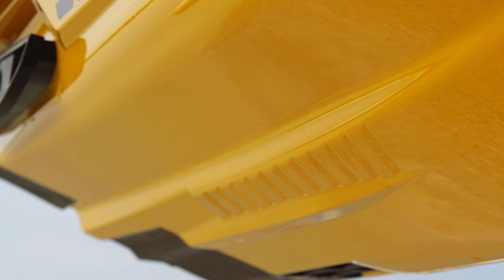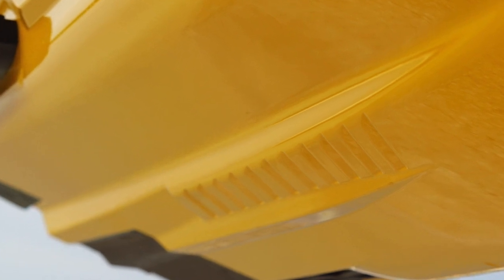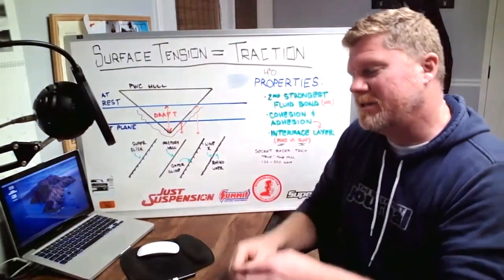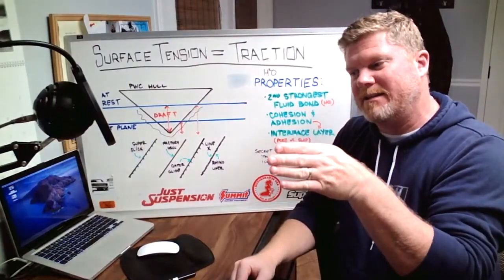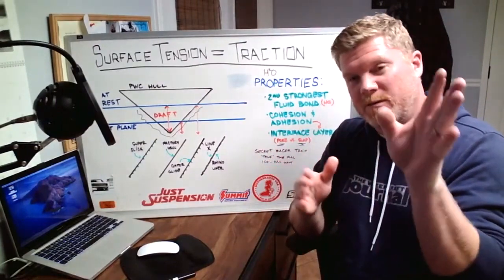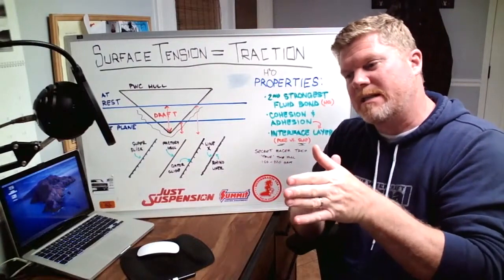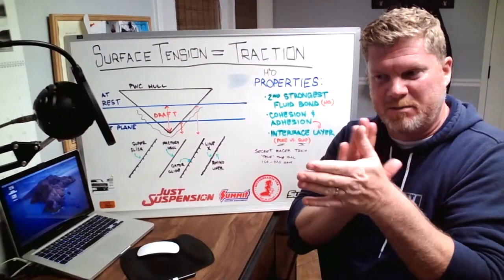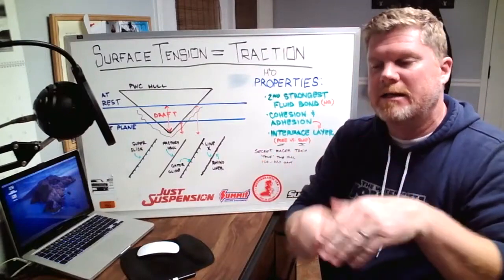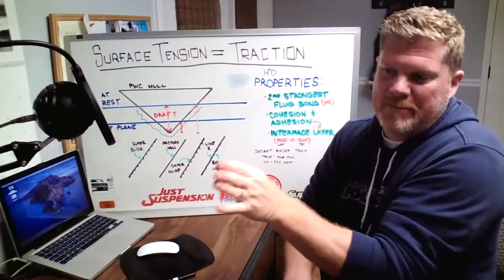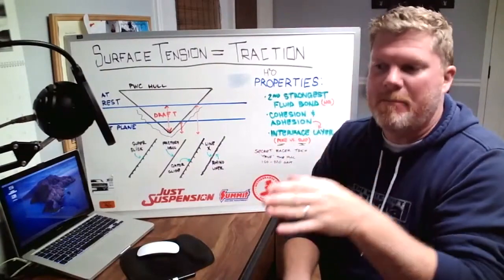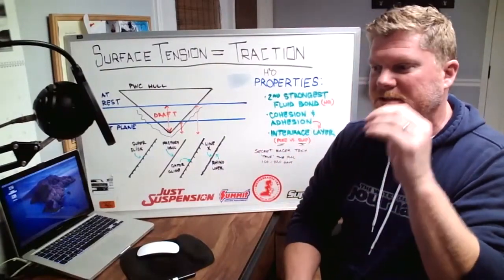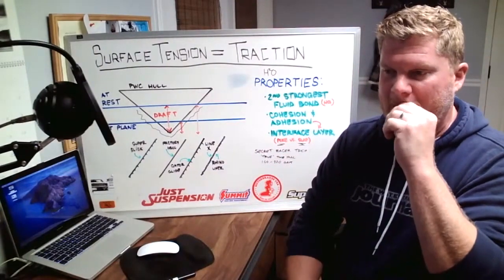But what was the big thing they started telling everyone about was the shark gills. Oh my gosh, it's got shark gills, oh it's so awesome. What the hell do shark gills do? The shark gills, the way the RXP-X was designed previously, was meant to have as much surface tension as possible and to bite in a hairpin corner so that it only wanted to snap turns. It wanted to snap hard, hard, hard. That was the design of that ski.